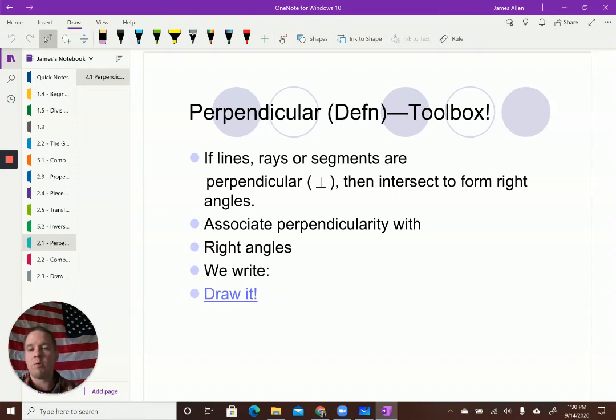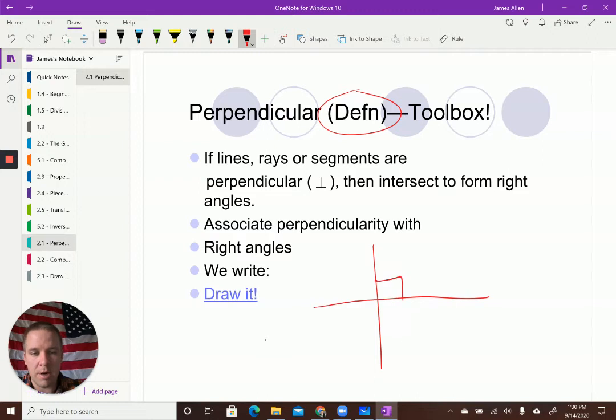And we can reverse this because it is a definition. If two lines, rays, or segments intersect to form right angles, then they are perpendicular. Awesome. Very good. So we just drew that. We'll draw it again right here. We can make them lines this time instead of line segments. Bipity bop, just don't stop. I like it.